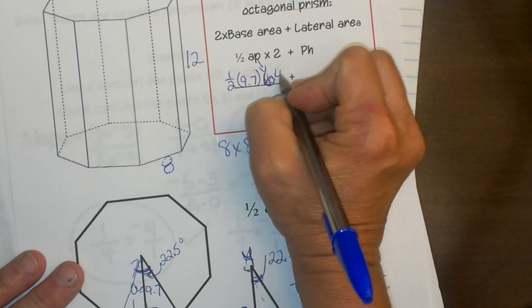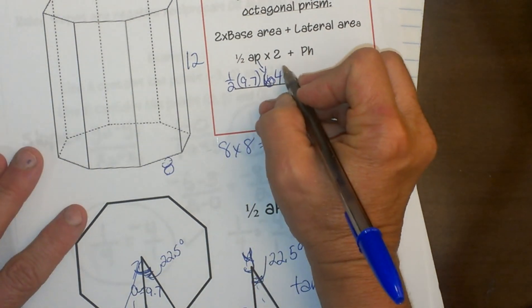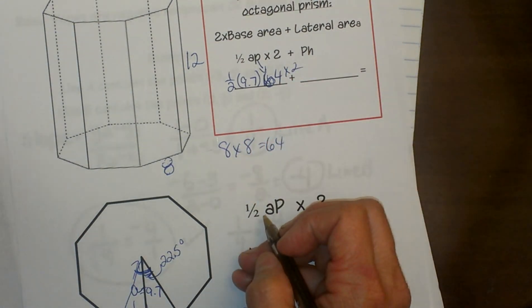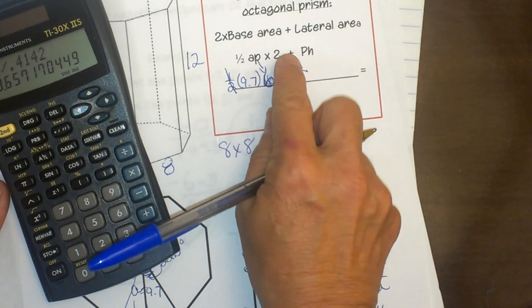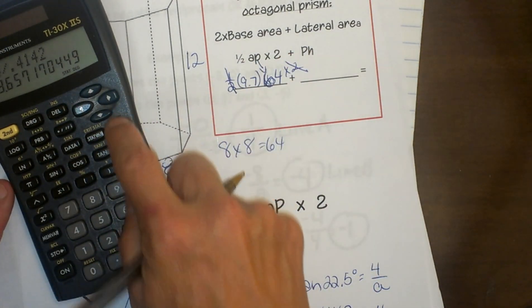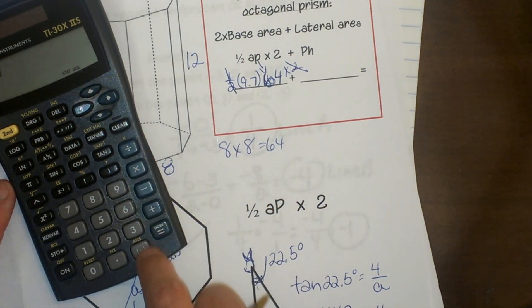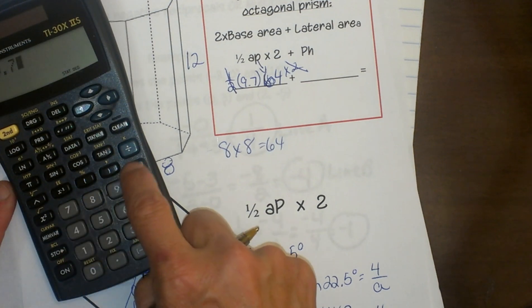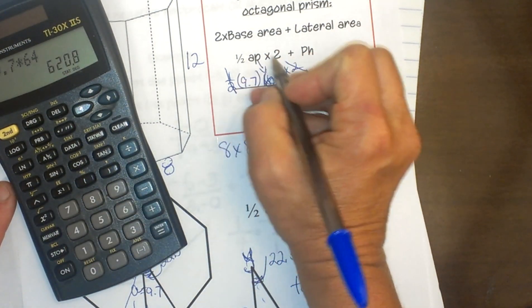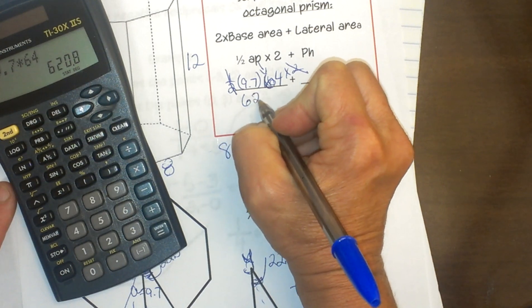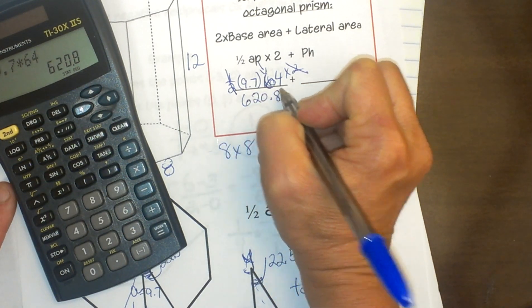And then once I multiply all that out, remember I have 2 bases, so I have to do times 2, or you can just not multiply by half to start with if you just want to cancel that half out. I'm going to take my 9.7 times 64, and that means my base areas are 620.8.